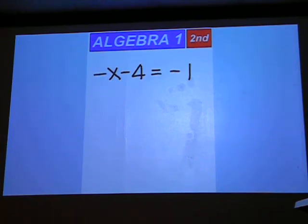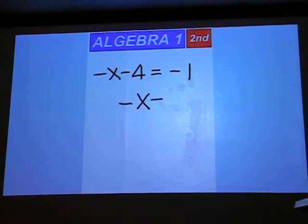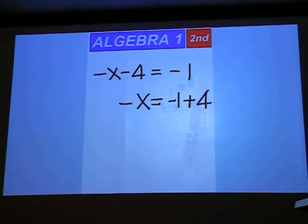Negative x minus 4 equals negative 1. Keep your negative x on the left. Move your minus 4 to the right and change it to plus 4. Negative 1 plus 4 is 3.